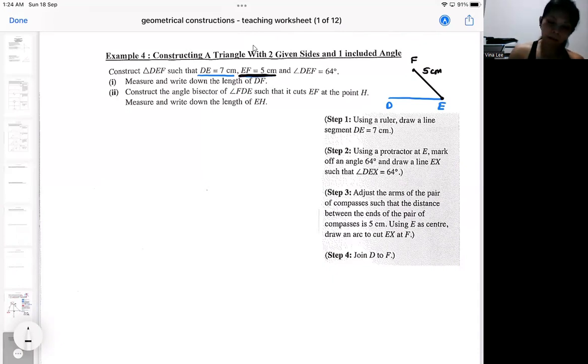But if you look at the angle DEF, this is a 64. So by right, I should measure a 64 first. So I should measure a 64 first, then I have the 5cm up. Then after that I can join that up. So that will become my triangle.